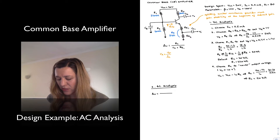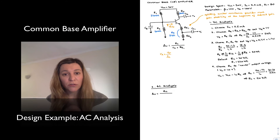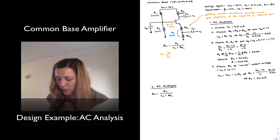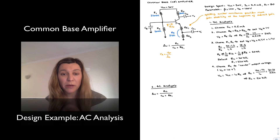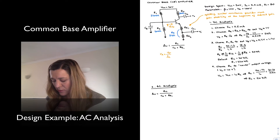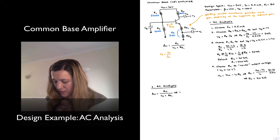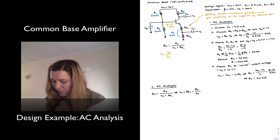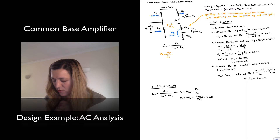The gain for a common base amplifier is equal to collector resistance divided by emitter resistance. In this case collector resistance is RC, and emitter resistance is the series combination of little re and RE1, because RE2 is being bypassed for AC analysis purposes. That means RE plus RE1 equals RC divided by the gain. With a target gain of 50, RE plus RE1 equals 20kΩ divided by 50, or 400 ohms.